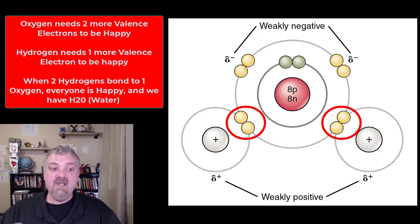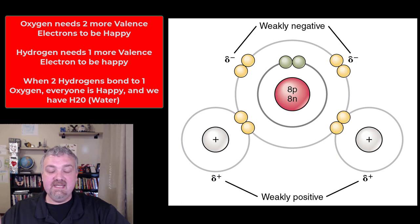Two hydrogens are going to bond with one oxygen forming water. Now they're all happy. Hydrogen has the two electrons it needs, oxygen has the eight electrons it needs. So everybody's happy in this situation. This would be one way that this can occur.